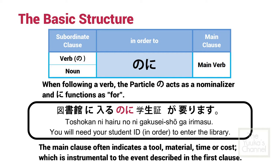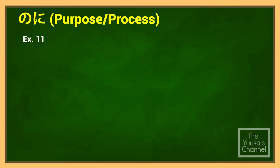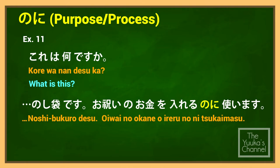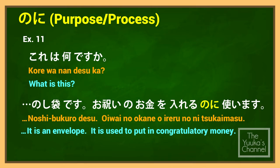The main clause often indicates a tool, material, time, or cost, which is instrumental to the event described in the first clause. Example: Noshi bukuro desu. O iwai no okane wo ireru no ni tsukai masu — It is an envelope. It is used to put in congratulatory money.